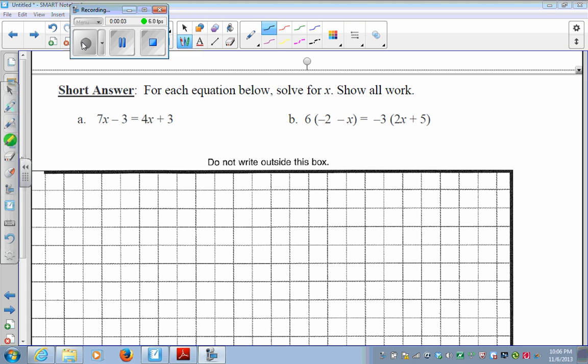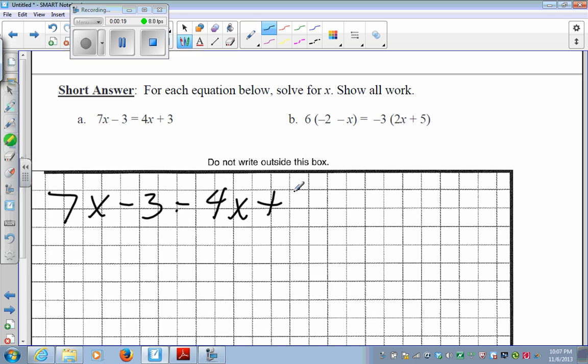Now, for the solving linear equation section of the test, I'm going to start with the short answer that was the fourth question on the assessment. And it says for each question below, solve for x and show all work. So for A, I'm going to do 7x minus 3 is equal to 4x plus 3.